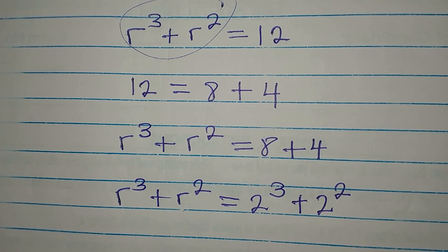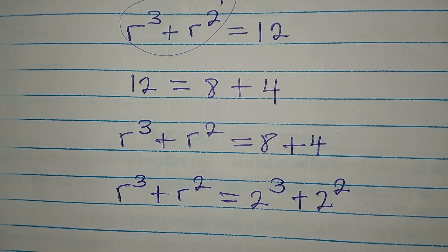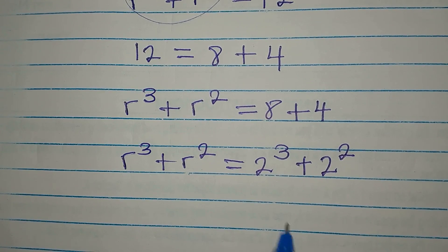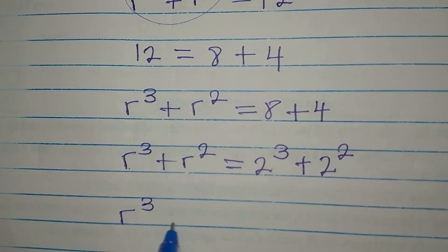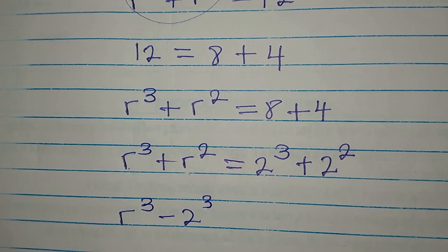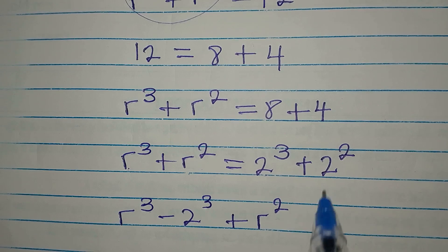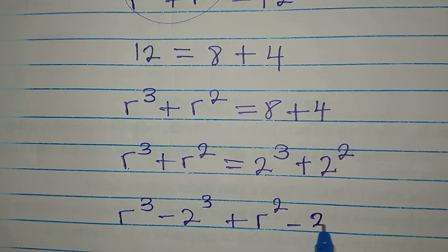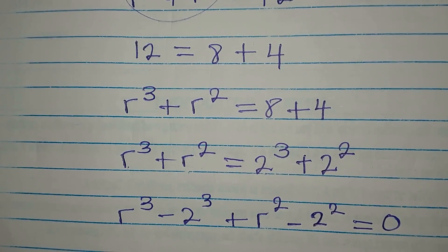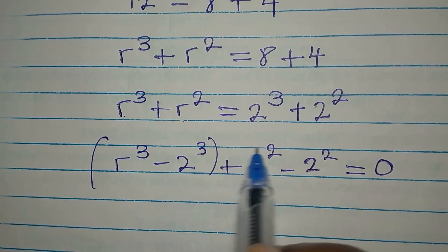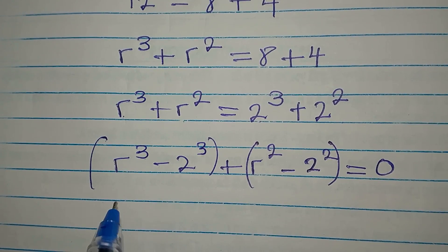Now let's bring both sides together. We have r to the power of 3 minus 2 to the power of 3, then plus r squared minus 2 squared. There's nothing on the right-hand side so we put zero there. These can be grouped and then factorized.